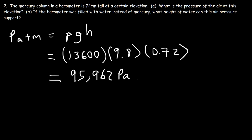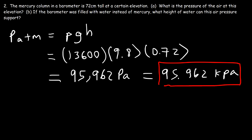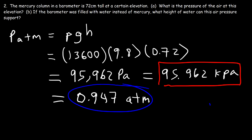Dividing 95,962 by 1,000 gives 95.962 kilopascals. To convert to atm, divide by 101.3 kilopascals, giving 0.947 atm. So the atmospheric pressure at this elevation is 95.962 kPa or 0.947 atm.